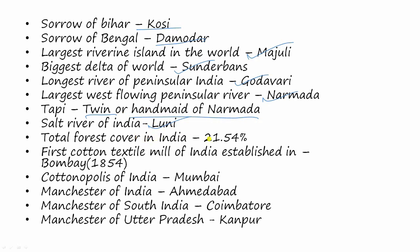Total forest cover in India is 21.54 percent. The first cotton textile mill of India was established in Bombay in 1854. The Cottonopolis of India is Mumbai, and the Manchester of India is Ahmedabad. The Manchester of South India is Coimbatore, and the Manchester of Uttar Pradesh is Kanpur.